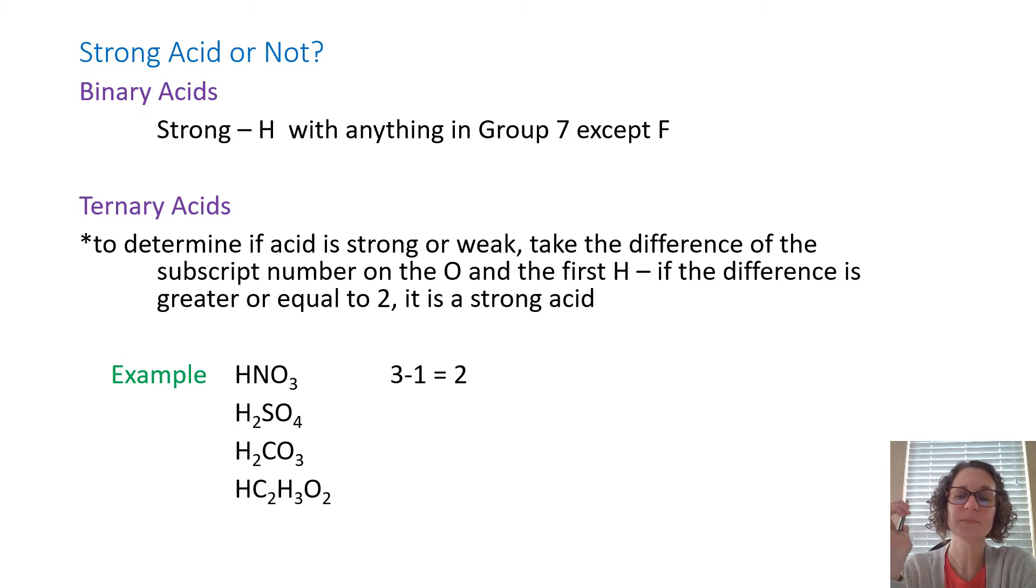So that's strong versus weak in terms of definitions. And determining that is actually there's a method to it, which is nice. You don't have just to memorize things. And so we have two forms of acids, which we talked about when we did the naming. We have binary acids or ternary acids. Binary acids are strong if they contain H with anything in group 7 except fluorine. So these are the halogens. Any halogen with hydrogen except fluorine, except for the top row, is going to be strong.